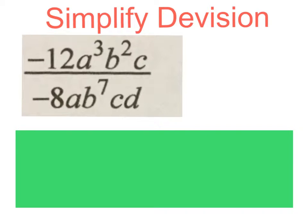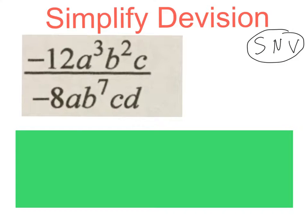Good day. In this video we're going to look at simplifying in division in Grade 8 and 9. There's also a special sum that I will do with you that I would like you to go to extra trouble to try and understand, because it's neglected a lot. So here is our first division sum. There's a division line over there. Remember we're going to use SNV — think about your signs, think about your numbers, and think about your variables.